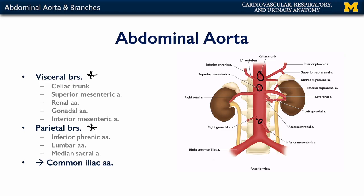In addition, there are several lateral branches of the abdominal aorta: the inferior phrenic arteries, which supply blood to the diaphragm; the middle suprarenal arteries, which supply blood to the suprarenal glands; the renal arteries, taking blood to the kidneys to be filtered; and the gonadal arteries, which supply blood to either the ovaries or the testes.